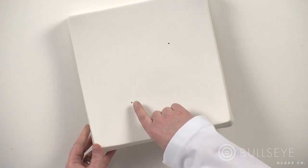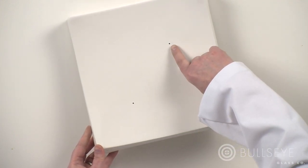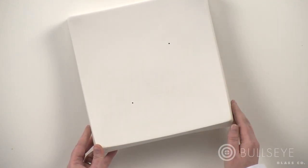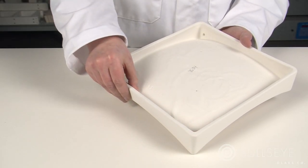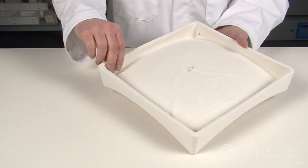Have vent holes in recessed forms to allow air to escape from between the glass and the mold, and have uniform wall thickness to promote uniform heating and cooling.